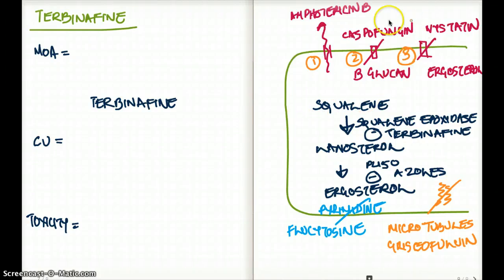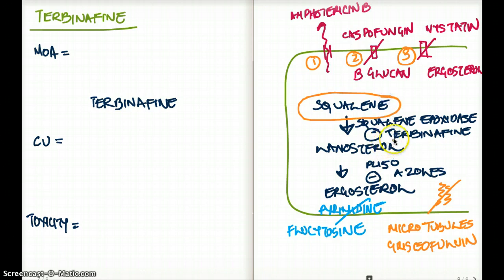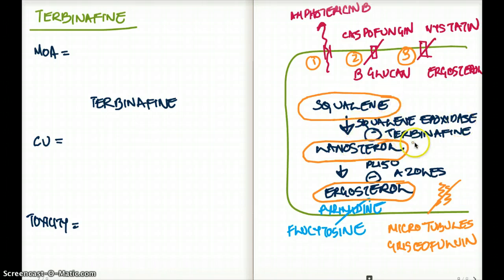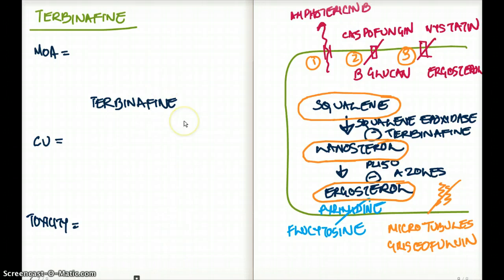Those are the three that work at the level of the cell wall or cell membrane. Now, squalene is a protein seen inside the fungus. Squalene is converted to lanosterol, and that conversion uses the enzyme squalene epoxidase. Squalene epoxidase is inhibited by the antifungal terbinafine — which is the drug we're going to be talking about here.